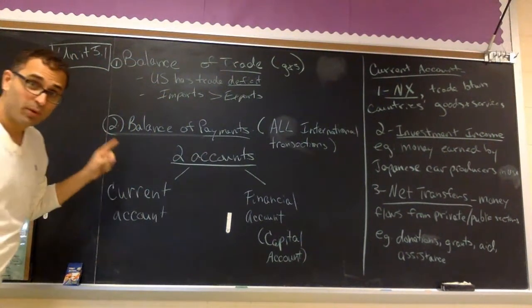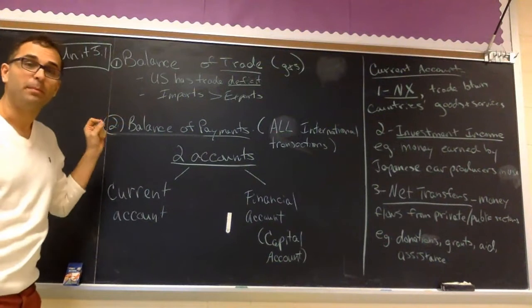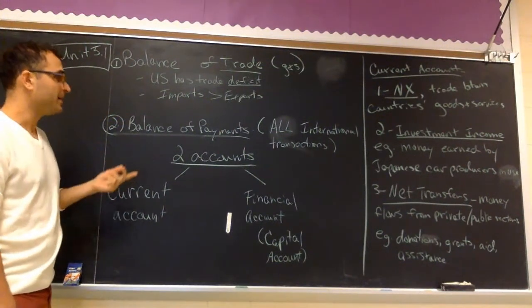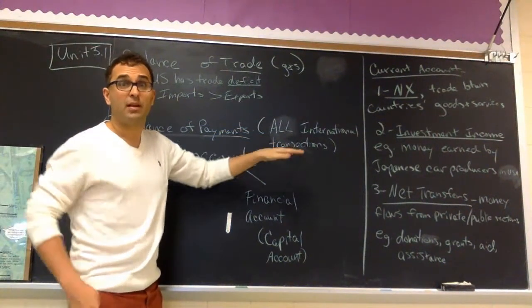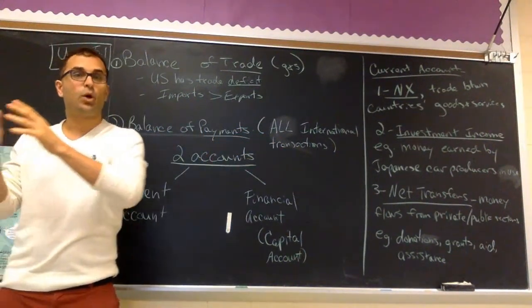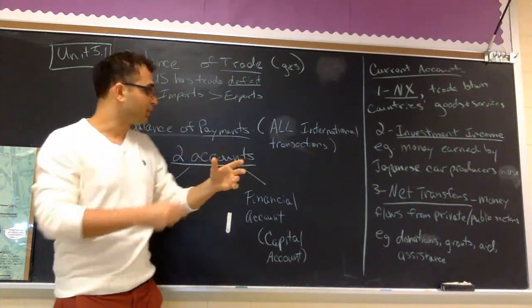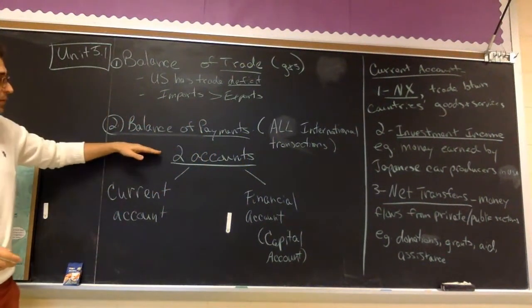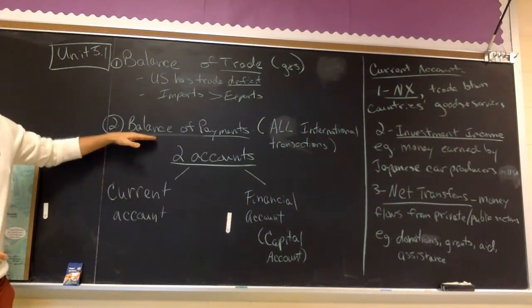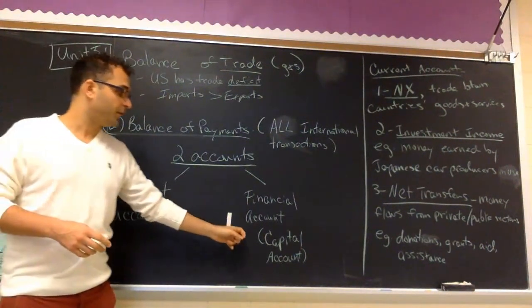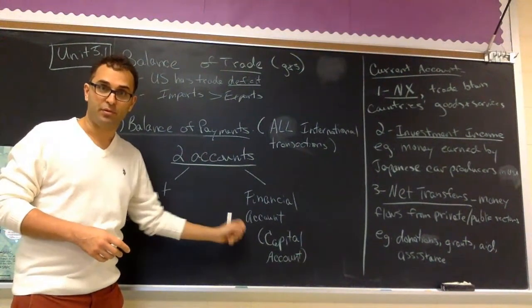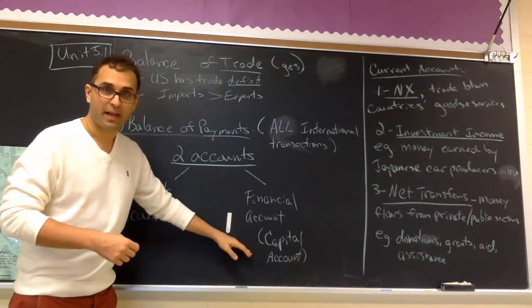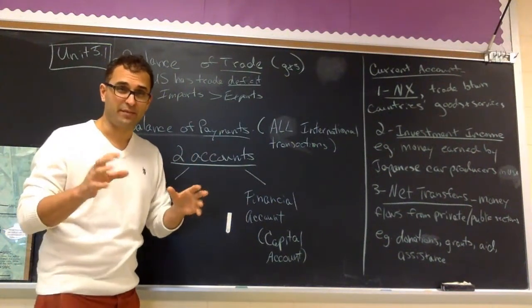This is called the balance of payments — not the balance of trade, the balance of payments. It means all international transactions: goods and services, but also financial transactions. There are two accounts in the balance of payments. The first one is the current account. The second one is the financial or capital account — those are two names for the same thing.